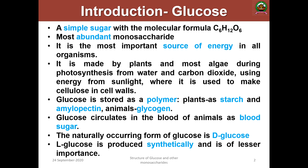Glucose is stored in organisms as long-storage polysaccharide polymers. In plants, glucose monomers are present in the form of polymers such as starch, which consists of amylose and amylopectin. In animals it is stored as glycogen, and in the case of animals, glucose circulates in the blood as blood sugar. The naturally occurring form of glucose is D-glucose. L-glucose is also produced but synthetically, and it is of lesser importance in biochemistry.